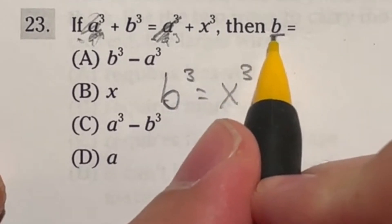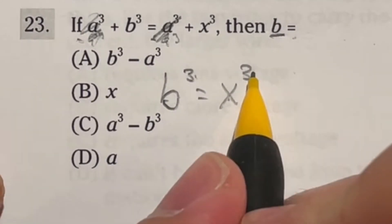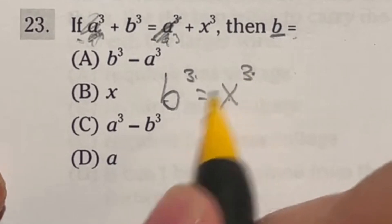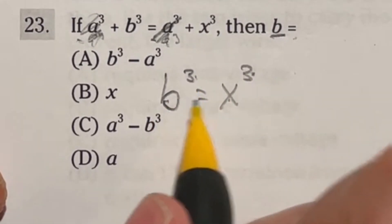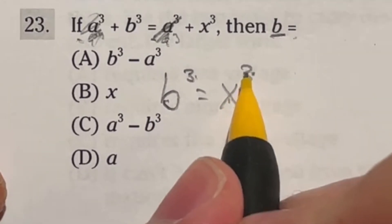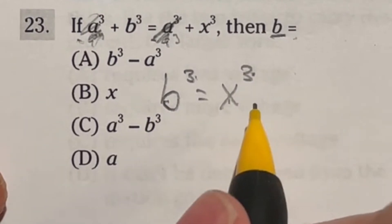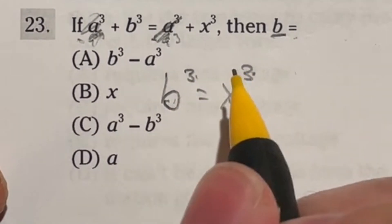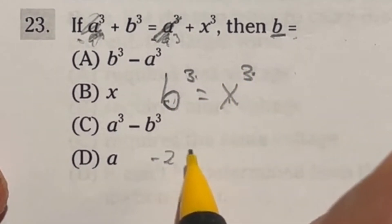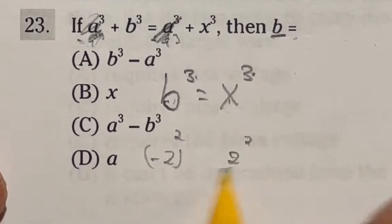So all we're left with is b cubed equals x cubed. Now notice it says that b is equal to what? Well, we have b cubed and we have x cubed. But here's the deal. Whatever number cubed here must be equal to this number cubed because they end up with the same answers. And two different things are not going to cube to the same answer because it is raised to an odd power. Now if it were like squared, I could have like negative two squared. And I could have two squared. And those would both give me four.